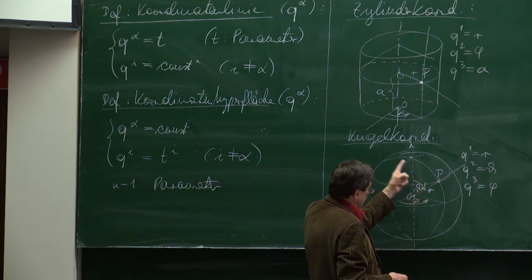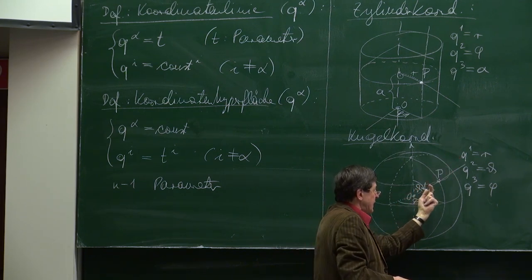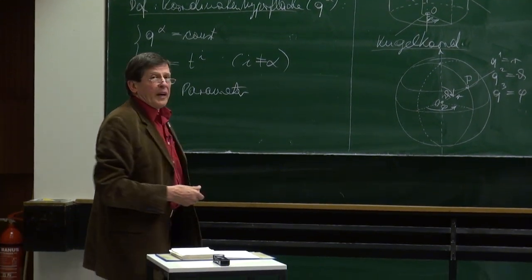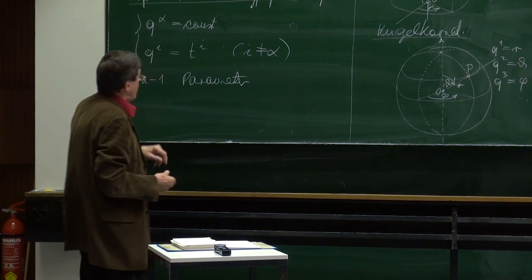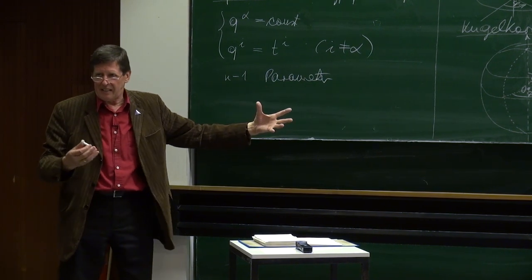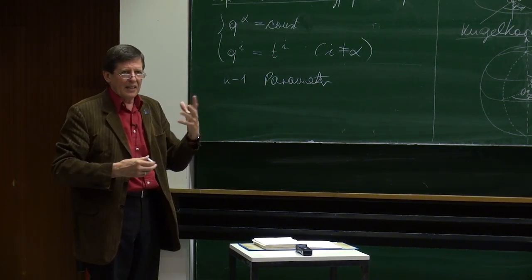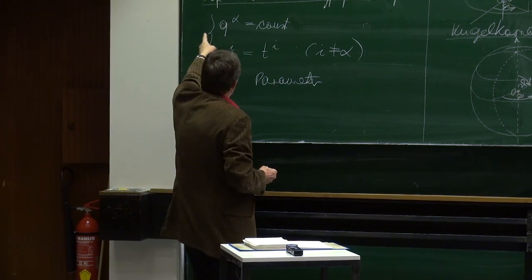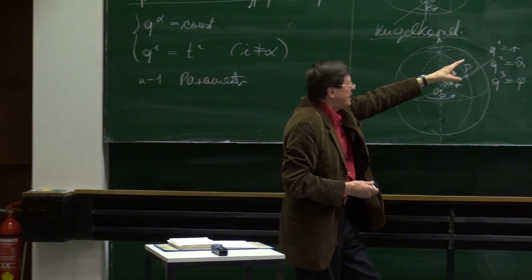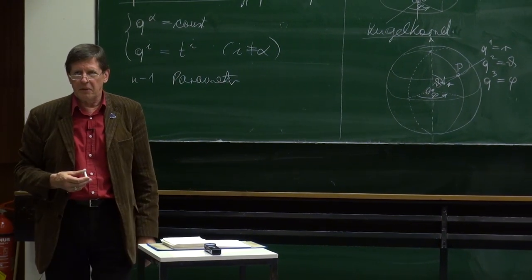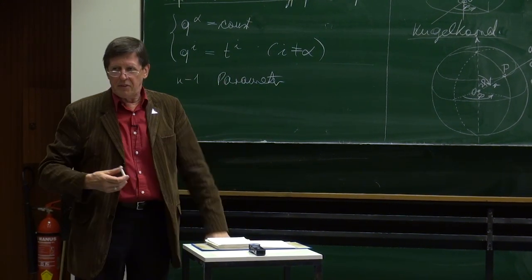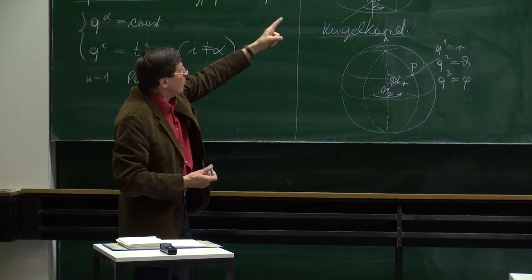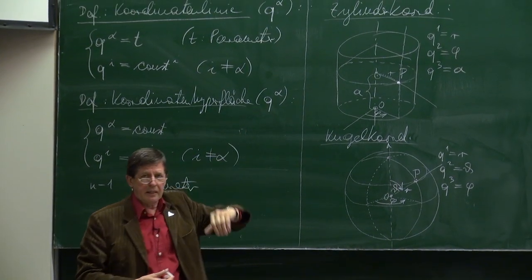Die R-Koordinatenlinien stechen radial nach außen in alle Richtungen. Die Theta-Koordinatenlinien sind die Meridian-Linien und die Phi-Koordinatenlinien sind die Breitenkreise. Wieder stehen alle aufeinander senkrecht: jeder Meridian steht auf den entsprechenden Breitenkreis senkrecht, und noch einmal senkrecht stechen die R-Linien heraus. Nun die Koordinaten-Hyperflächen: Q1-Koordinatenfläche, R konstant. Wenn R konstant ist und alles variiert, hat man eine Kugel – lauter konzentrische Kugeln rund um den Ursprung. Daher Kugelkoordinaten.